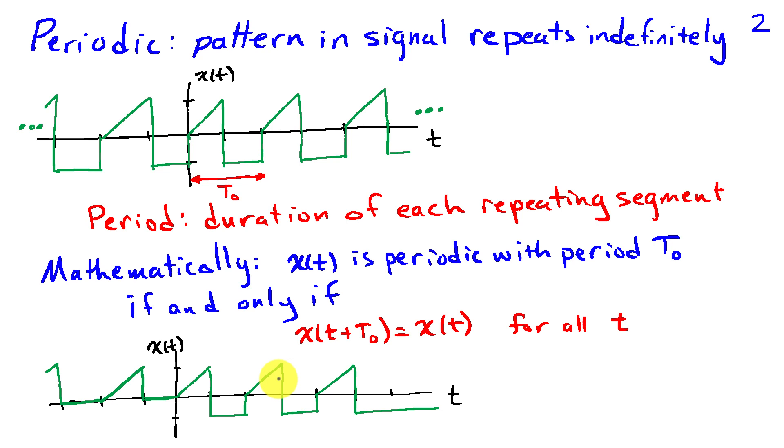I have a couple repetitions here and this triangular section repeats, but the signal does not repeat indefinitely because in this region here and further to the right I don't have the same pattern that I have near zero. And we would say that that's an aperiodic signal or a non-periodic signal.